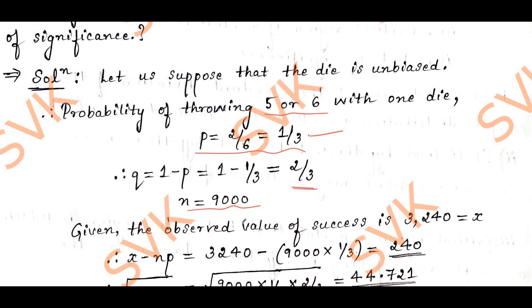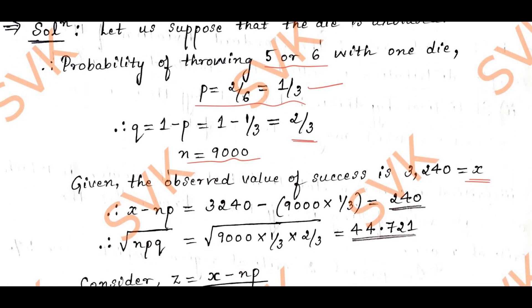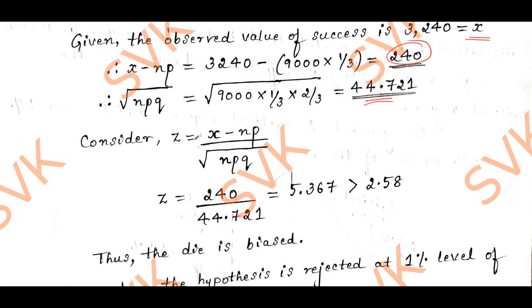The observed value of success is given by 3,240, named as x. Therefore, x minus np equals 240. Finding the standard deviation, square root of npq, by substituting the values of n, p, and q, and substituting all values, we get the value of z as 5.367.